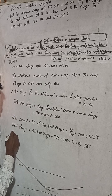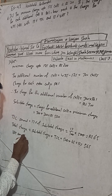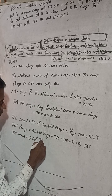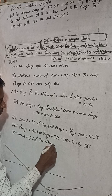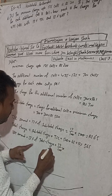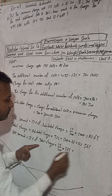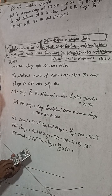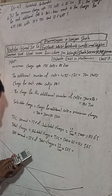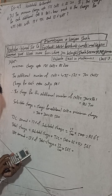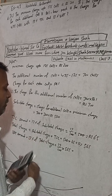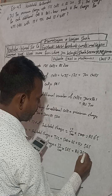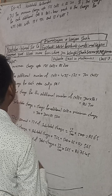Now the VAT amount is equal to 13% of total charge — that is 13% of Rs.565. So 565 into 13 divided by 100 equals Rs.73.45. The VAT amount is Rs.73.45.